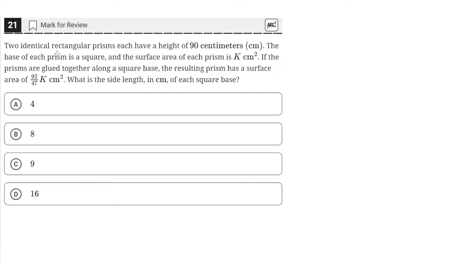Two identical rectangular prisms each have a height of 90 centimeters. The base of each prism is a square, and the surface area of each prism is k cm². If the prisms are glued together along a square base, the resulting prism has a surface area of 92/47 k cm². What is the side length in cm of each square base?